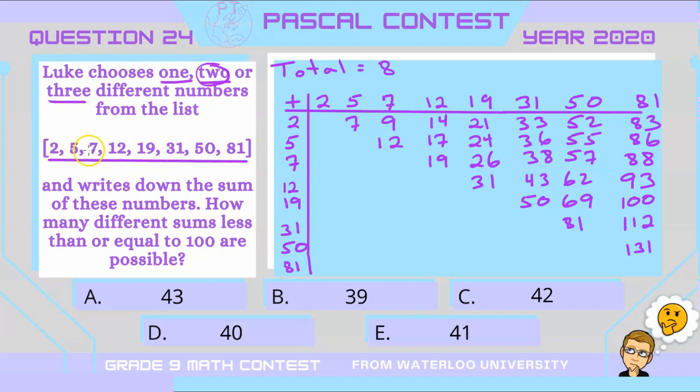We've already included those numbers in our possibilities, so we're going to cancel them out here. And we can also cancel out the numbers that get too high above 100. So now we're left with 20 additional possibilities for our total.